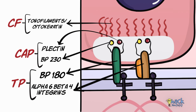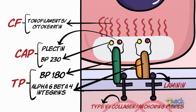Together, these proteins along with other constituents of the basal lamina — like laminin and type 7 collagen, otherwise called anchoring fibrils — help in the firm attachment of the epithelium to the connective tissue.